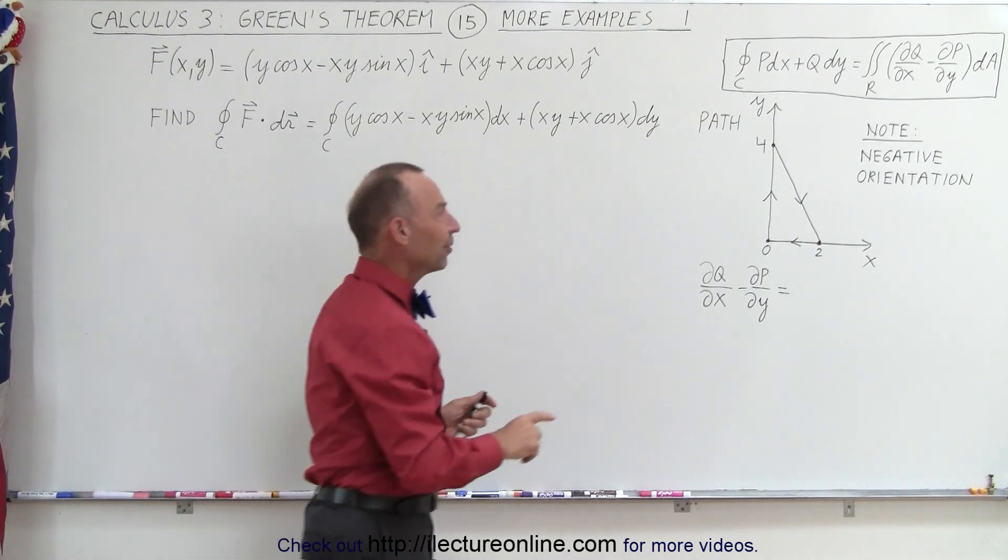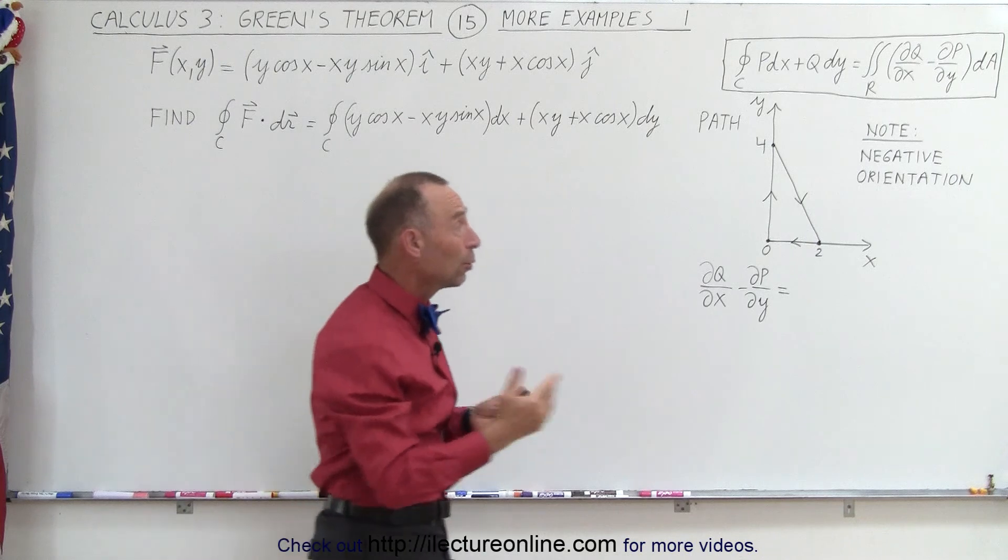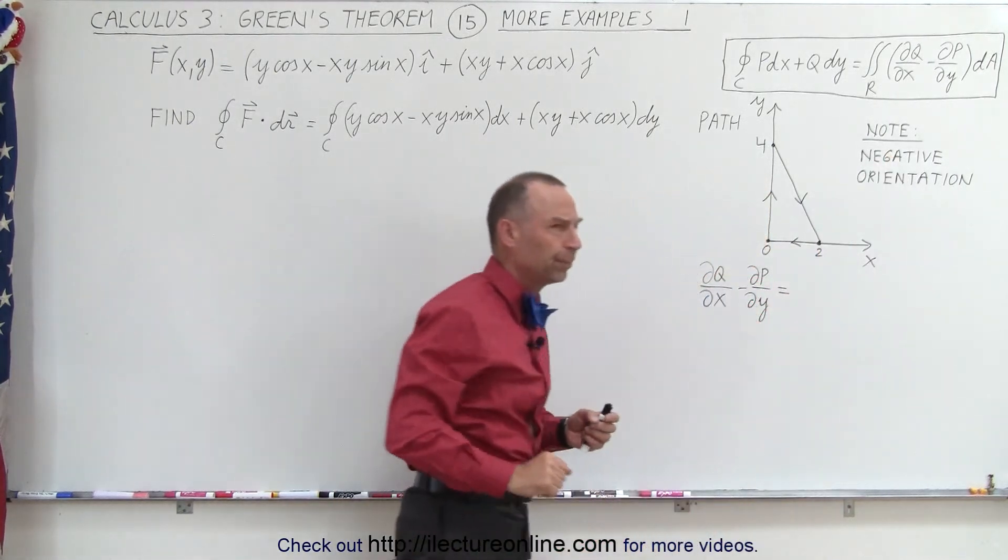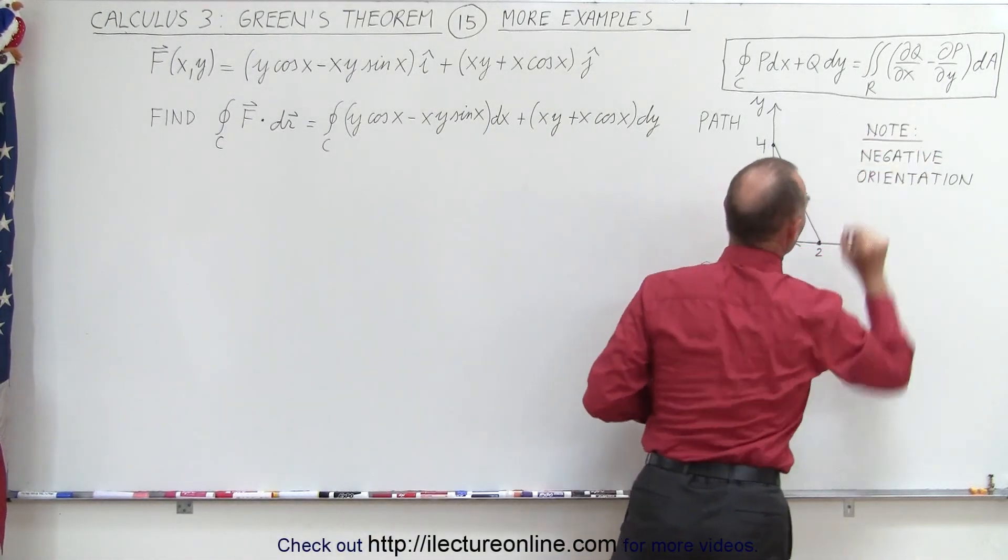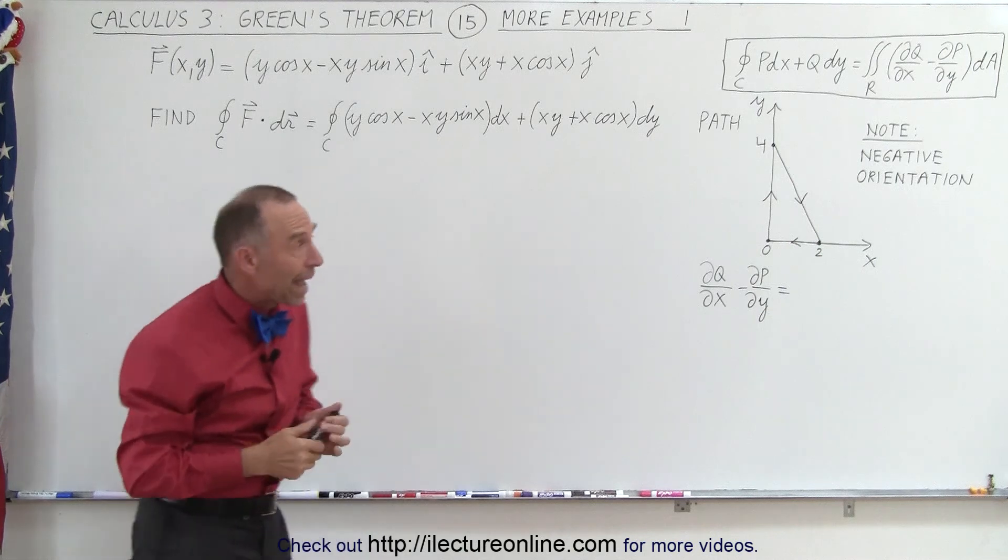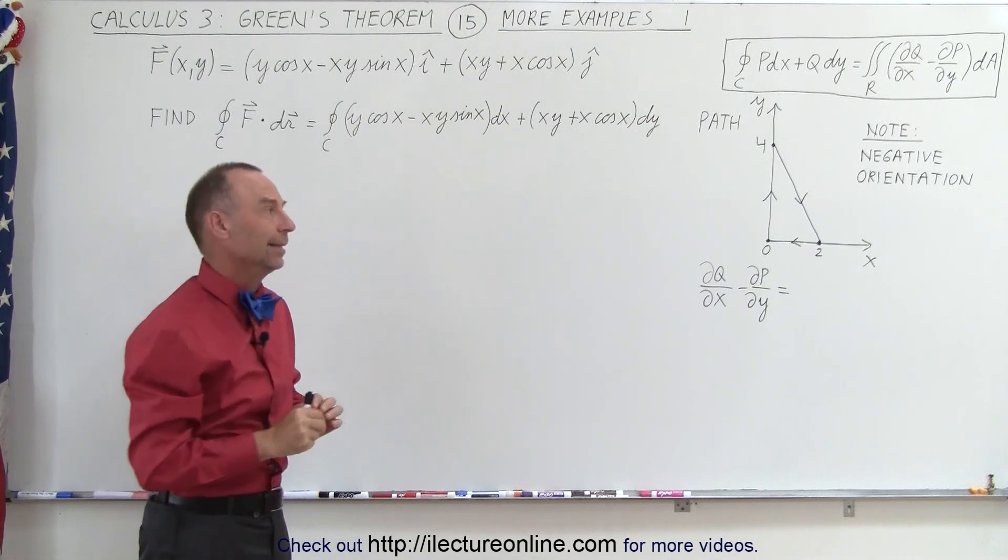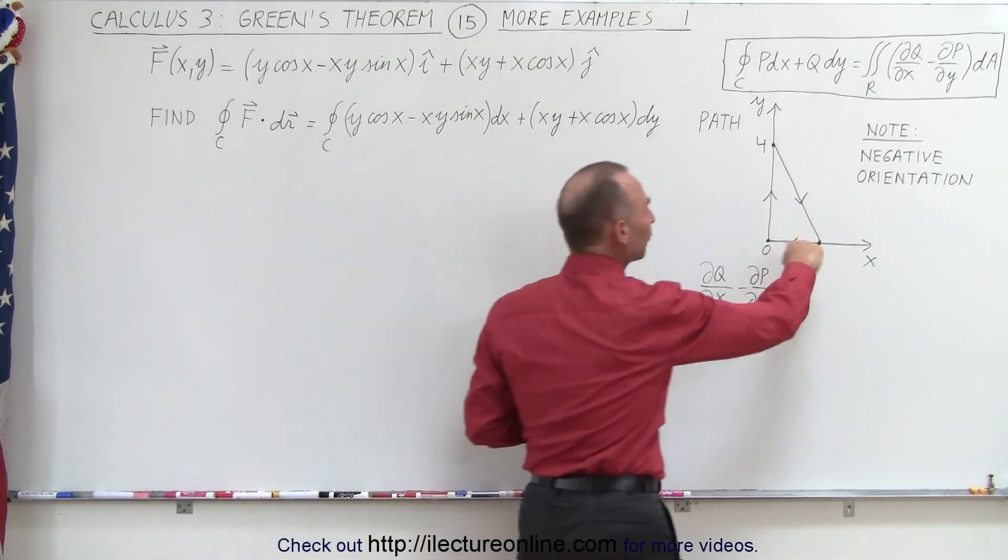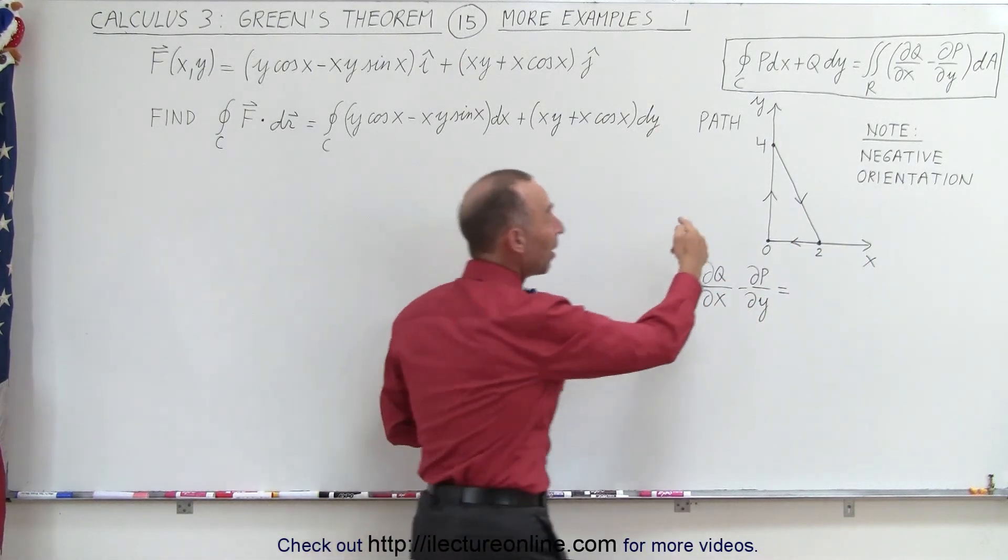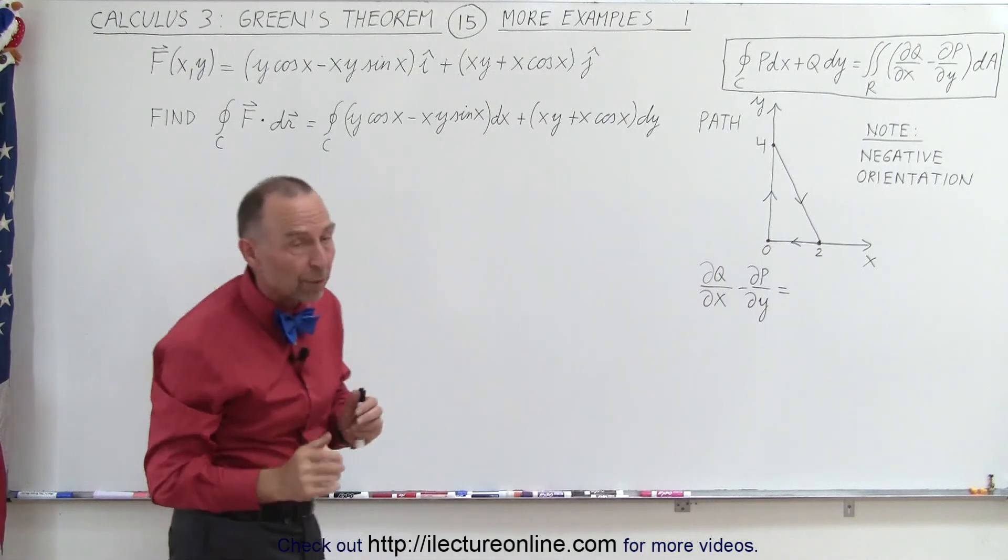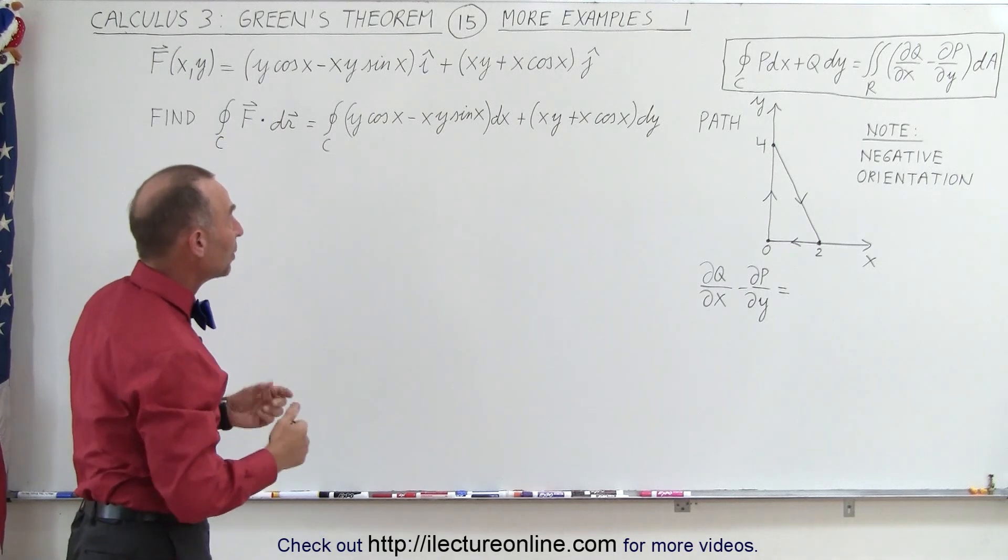But what we're doing here different is that we're going clockwise around the path instead of counterclockwise, which means we have a negative orientation. You can't really tell when you do Green's Theorem, the right side of the equation, whether or not you went around the path clockwise or counterclockwise, so we have to pay attention at the end to make sure we give it the correct sign. If we have a negative orientation, then we need to add a negative sign to the final answer. If we have a positive orientation, then we take the answer as is. So here's an example of that, and at the end you can see what we need to do to the answer.